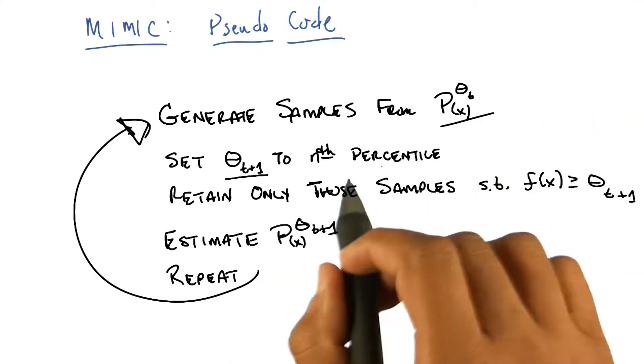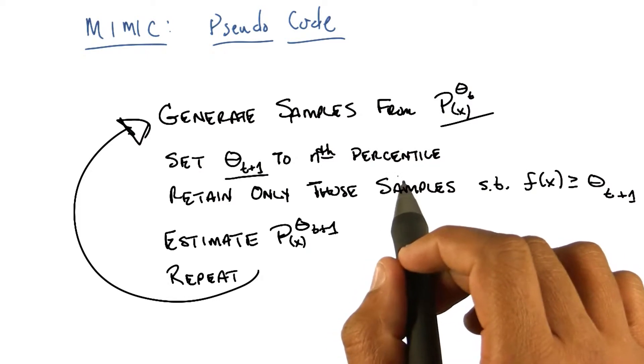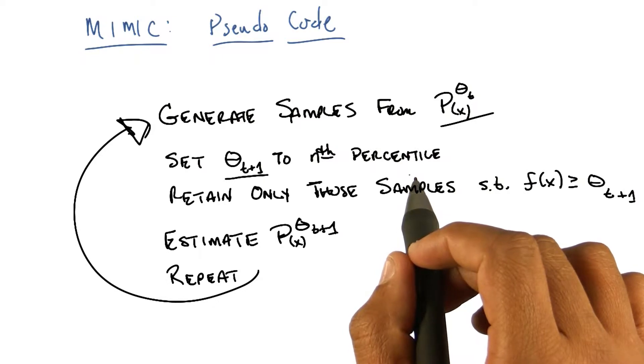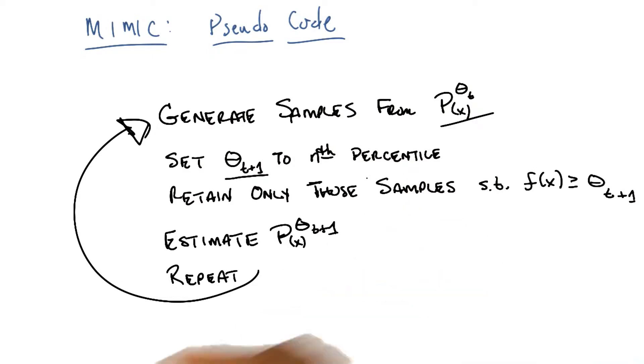Now, you'll notice that this should actually remind you of something. Does it remind you of any of the other randomized algorithms that we've looked at so far? Maybe a little bit like simulated annealing? No. Because we're choosing the percentile. That's a lot like genetic algorithms. Right. It's exactly like genetic algorithms.